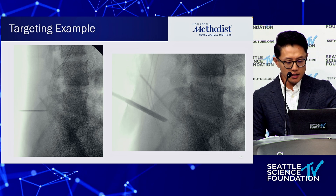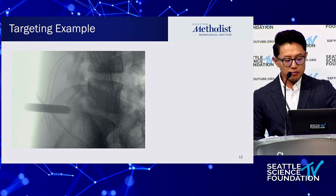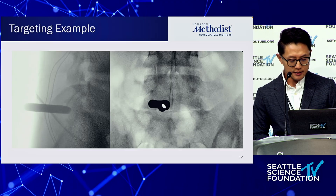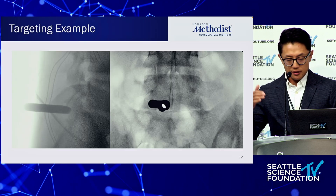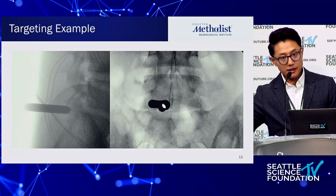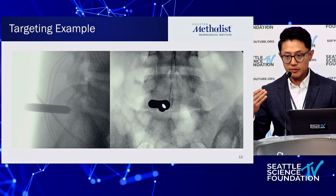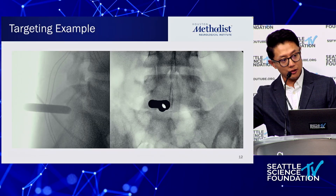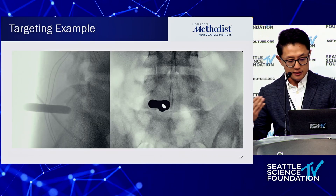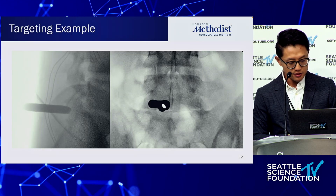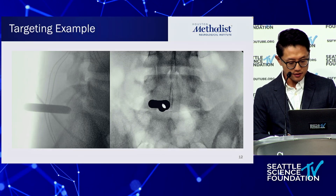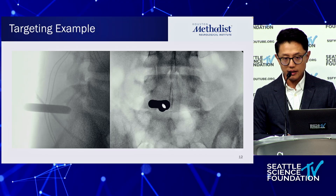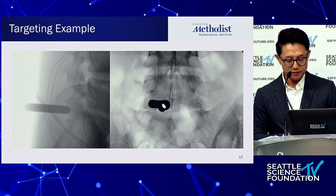Once you do that, you can dock your probe — and this is what it should look like. Generally, if you start a little more medial, these scopes all have about 15 degrees of angulation, so you can look lateral and undercut the facet, decreasing bone resection and minimizing disruption to the facet joint. In many cases at L5-S1 you don't have to remove any of the facet joint at all.